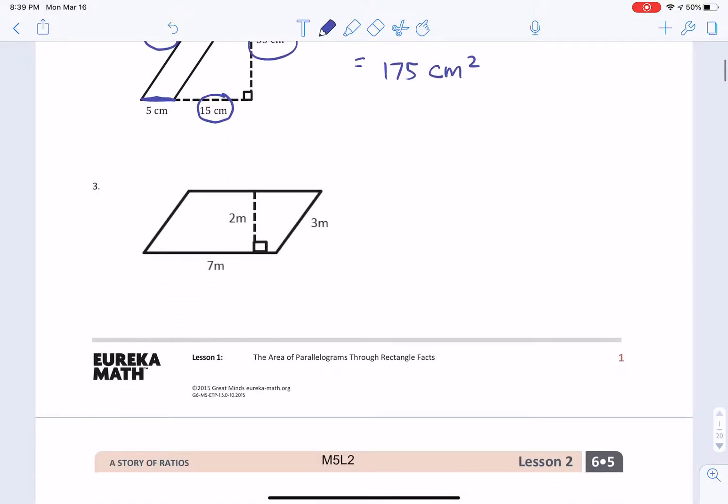All right. Last one. Oh, this one's really easy. As you can see, we have a base of 7. Area equals base times height. We have a base of 7 meters. We have a height of, is it 2 or is it 3? Do not be fooled. 3 is not the height. 2 is the height. Because of this perfect, straight up and down, perpendicular, 90 degree angle, 2 meters. Therefore, the answer is 14 meters squared.